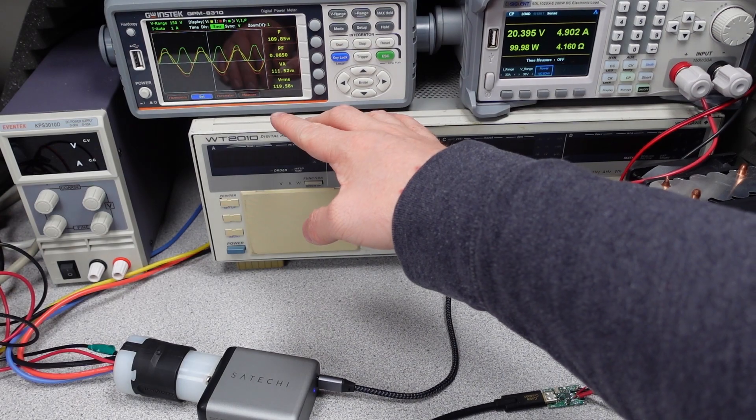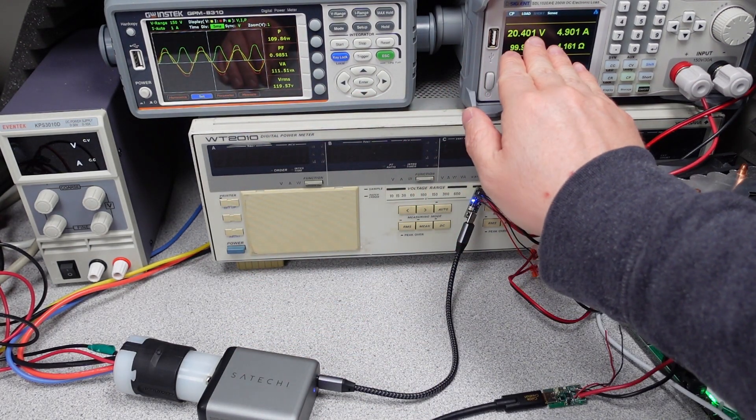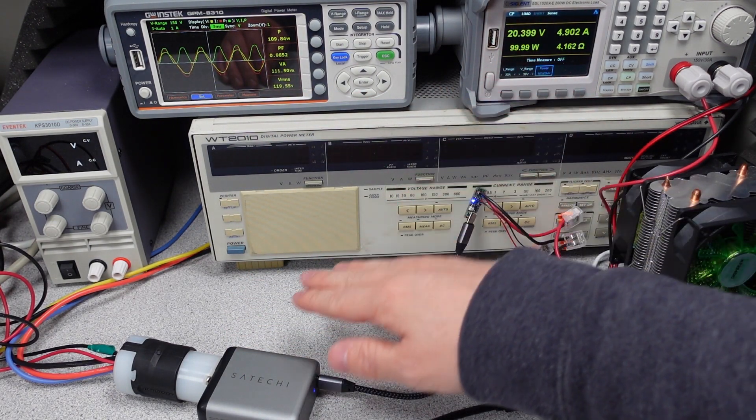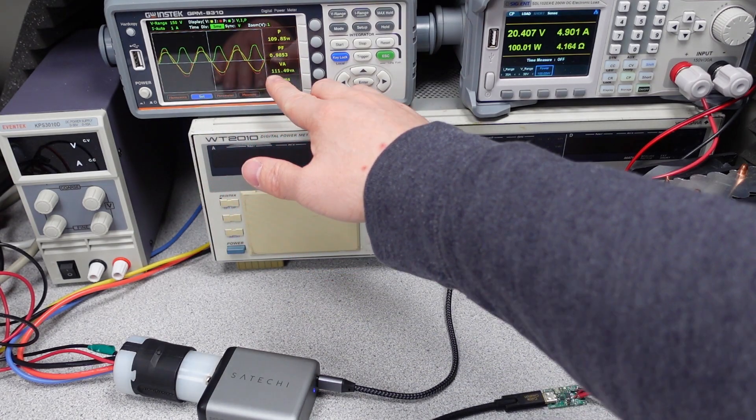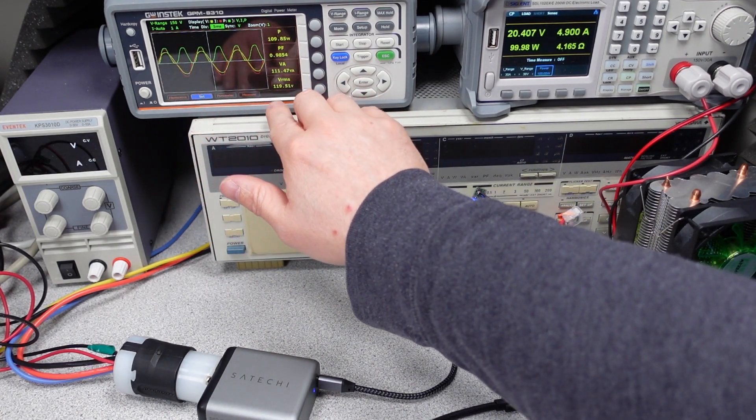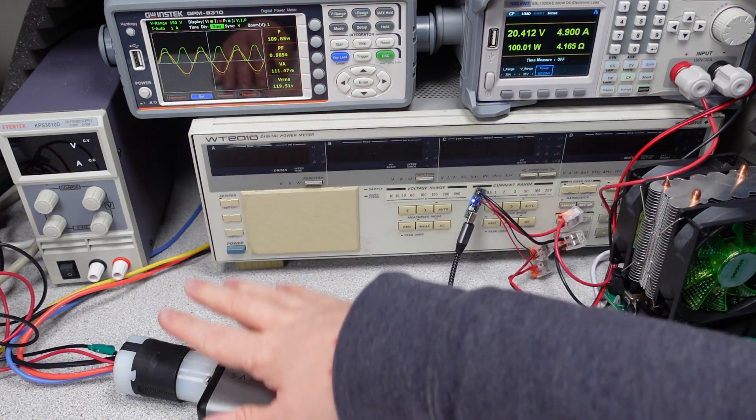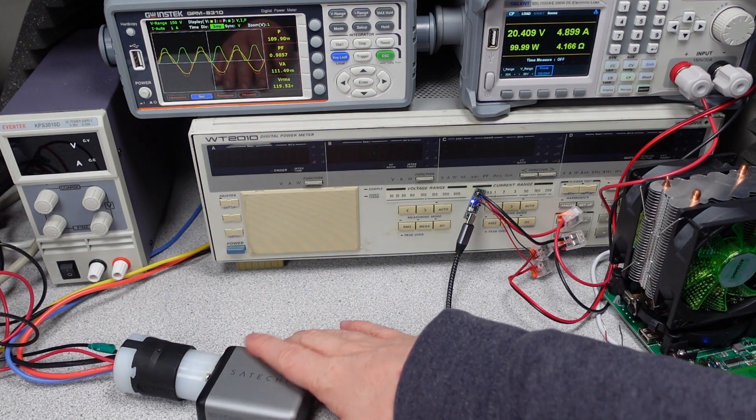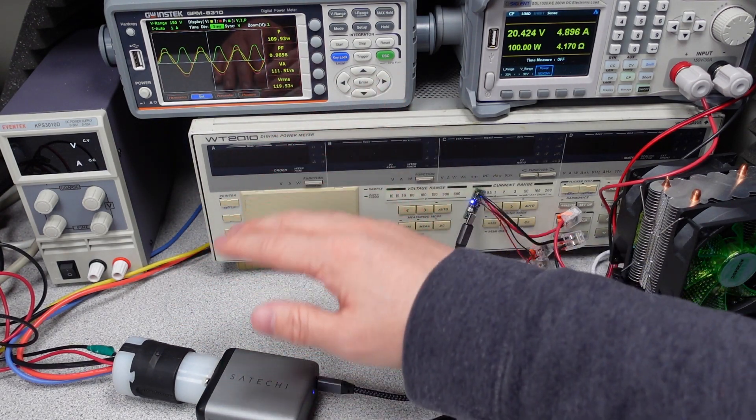Alright, so just as an example, we're now doing this Sateshi power adapter. We're drawing our 100 watts over here, and we can take a look at these waveforms. They all look about the same. They're all pretty much on top of each other. We have a very high power factor, because this does have power factor correction only in the 20 volt mode, which is not great, but it does at least have it.